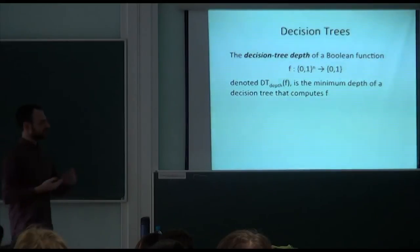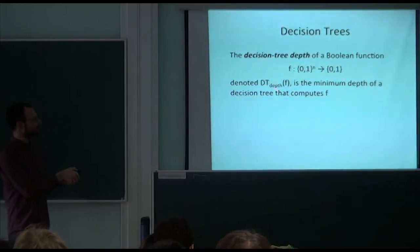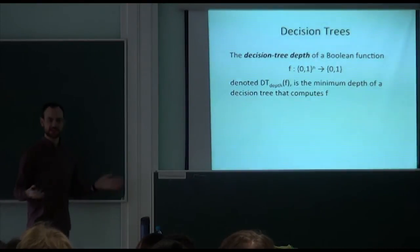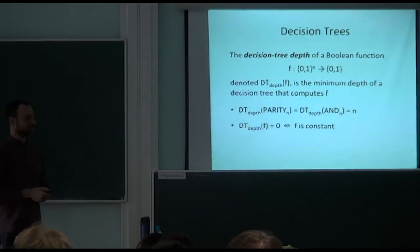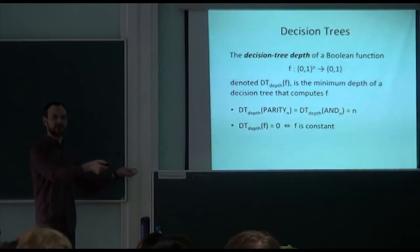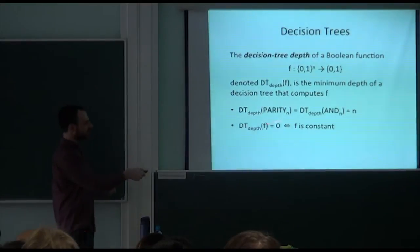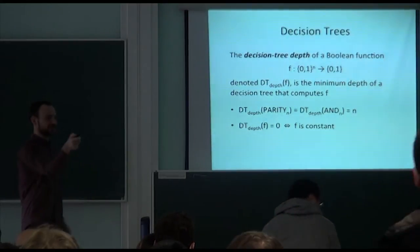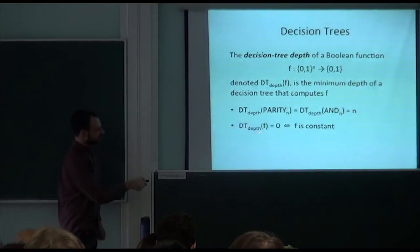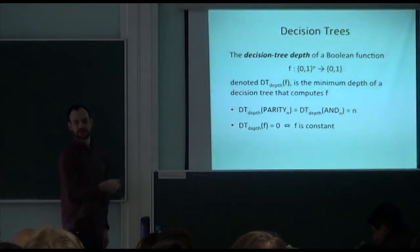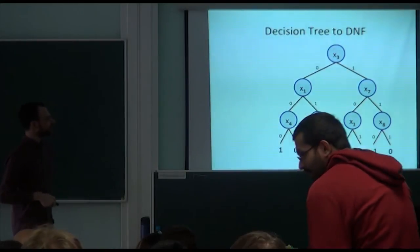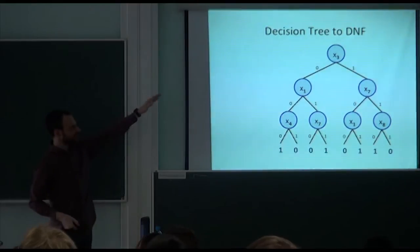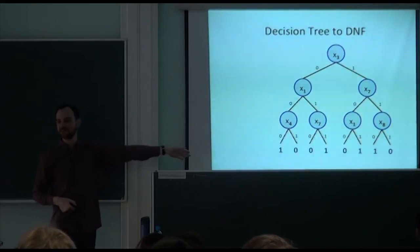Decision trees give a natural complexity measure. For an n-variable Boolean function f, its decision tree depth, denoted dt-depth, is the minimum depth over all decision trees computing f. The parity function and the n-variable AND function both have decision tree depth n — in the worst case you need to read all n variables. Decision tree depth 0 means the function is constant.